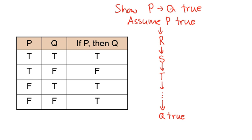So assuming that P is true: P is true implies R is true, which implies S is true, which implies T is true, which implies Q is true. That process of P implies R implies S implies T — that process is called a syllogism. Let's connect that back to our conditional table.